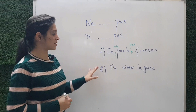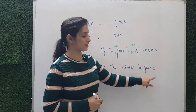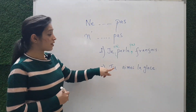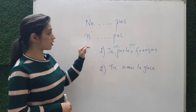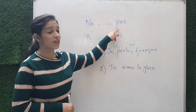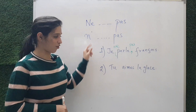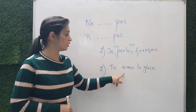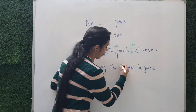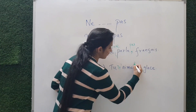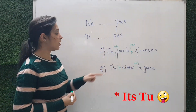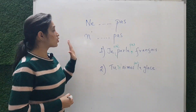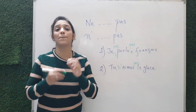The second sentence is 'Tu aimes la glace,' which means 'You like ice cream.' We have to change this into its negative form. The verb is 'aimes' and it starts with a vowel, so we put 'n apostrophe' and 'pas.' The sentence becomes 'Tu n'aimes pas la glace' — 'I don't like ice cream.'